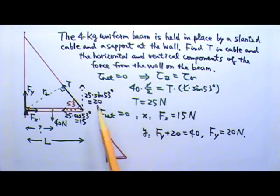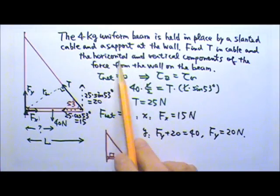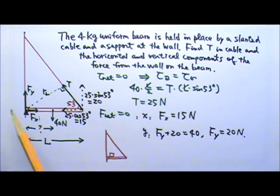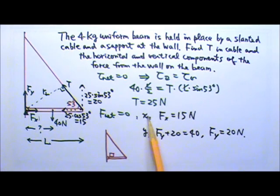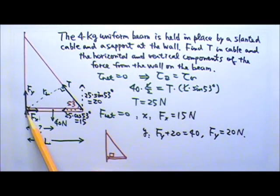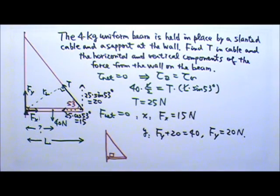Even if the problem does not ask us to find the horizontal and vertical components of the force separately, it's still a good idea to separate the components. Because when we write the net force equals zero, we still have to look at the two directions separately. That's why even though we have a slanted tension, we still want the components. For the force on the wall, it may not be obvious which direction the total force is going, so it's easiest to just say it has two components, Fx and Fy, and then go from there.